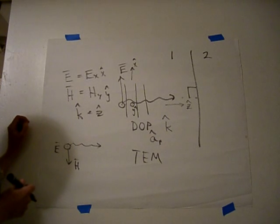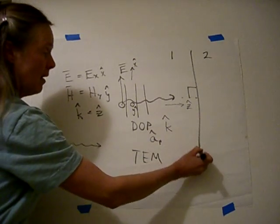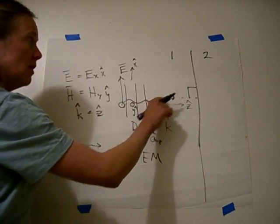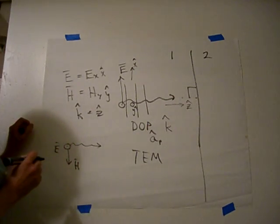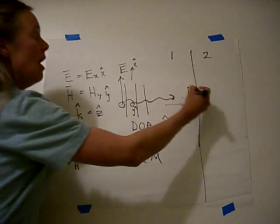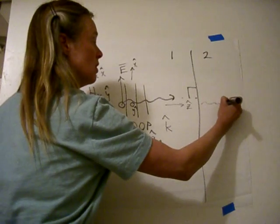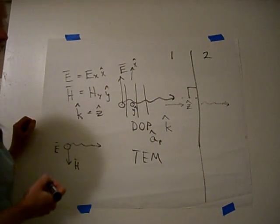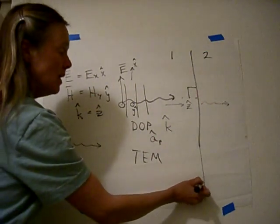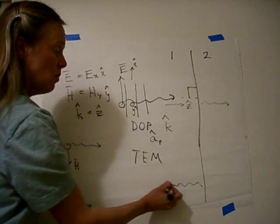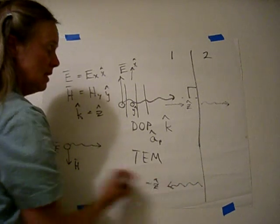Now let's see what happens when this wave hits the boundary and reflects back. So the incident field propagates in the positive Z direction and then we get some transmission which is also propagating in the Z direction. And we get some reflection which is propagating in the minus Z direction.